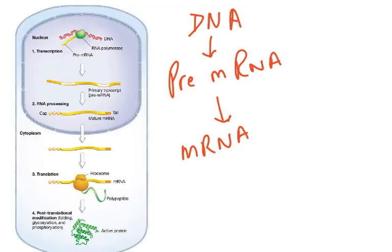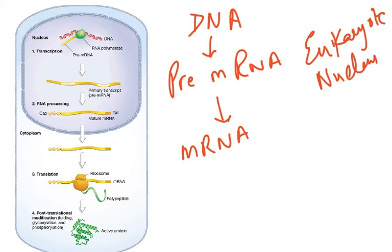We did not talk about this at AS level, but we'll discuss it now. In eukaryotic cells — which have a nucleus — transcription occurs, producing DNA, and from the DNA we make pre-mRNA.